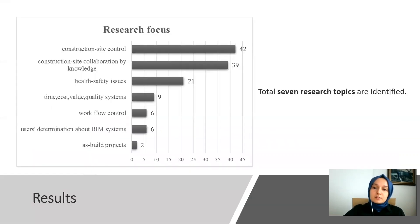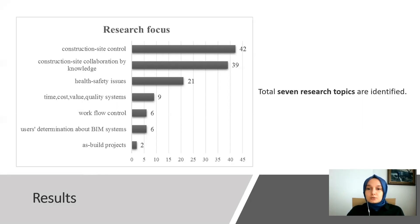A total of seven research topics are identified. These topics are: construction site control, construction site collaboration by knowledge, health and safety issues, time, cost, value and security systems, workflow control, users' determination about BIM systems, and as-built projects. Construction site control, construction site collaboration by knowledge, and health and safety issues are the most researched areas in the field.